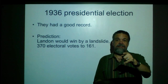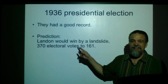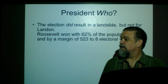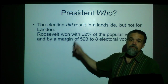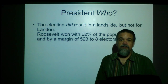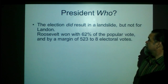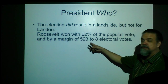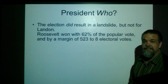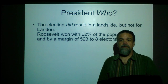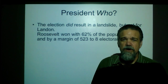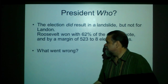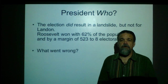Guess what didn't happen? That's right — this didn't happen at all. Instead, what happened was Roosevelt won. Roosevelt won by a landslide: 62% of the popular vote and by a margin of 523 to 8 electoral votes. So what happened? Why did it go so crazy wrong?